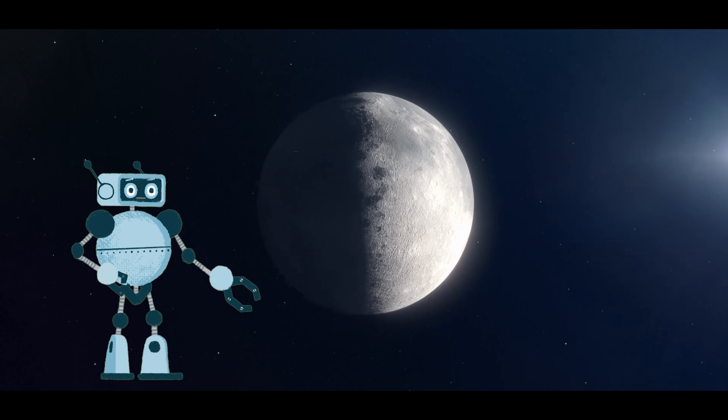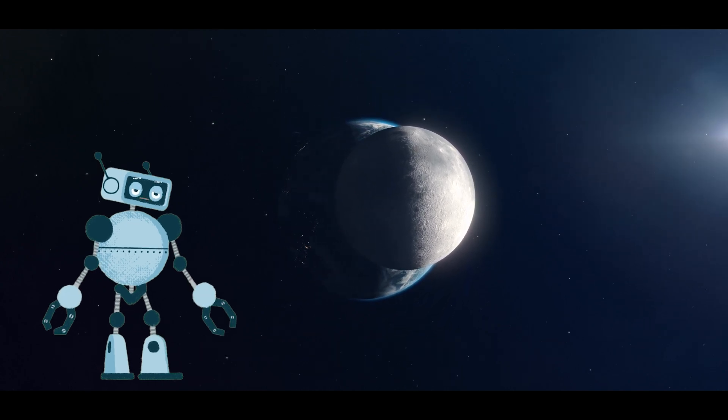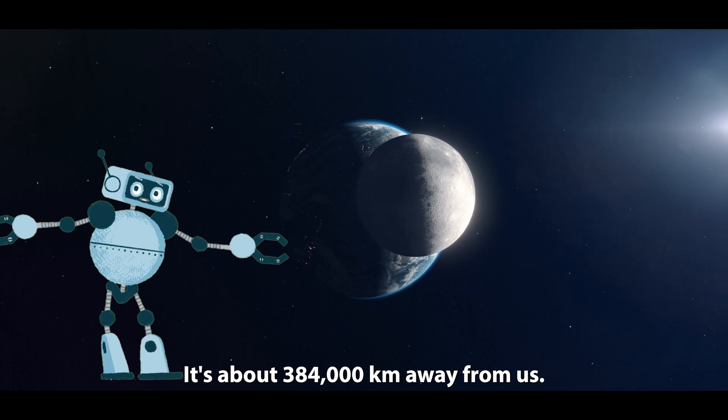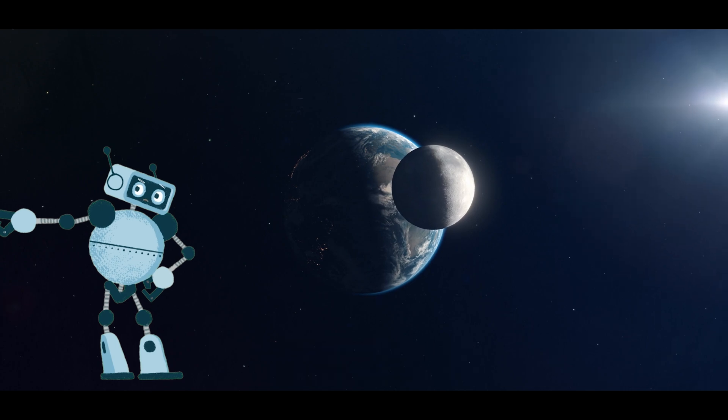Fact four: Earth has one moon. We have one beautiful moon that orbits Earth. It's about 384,000 kilometers away from us, and it plays a big role in creating ocean tides.